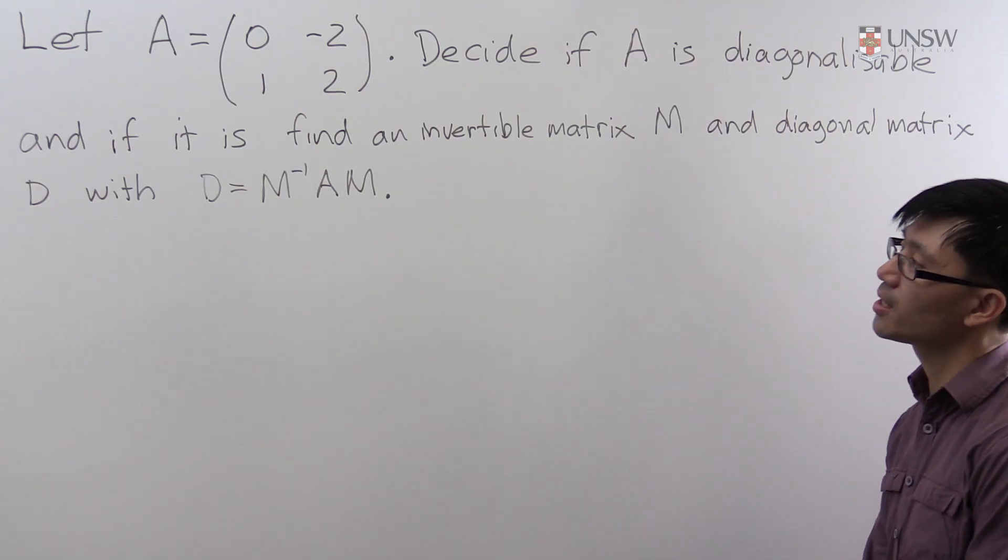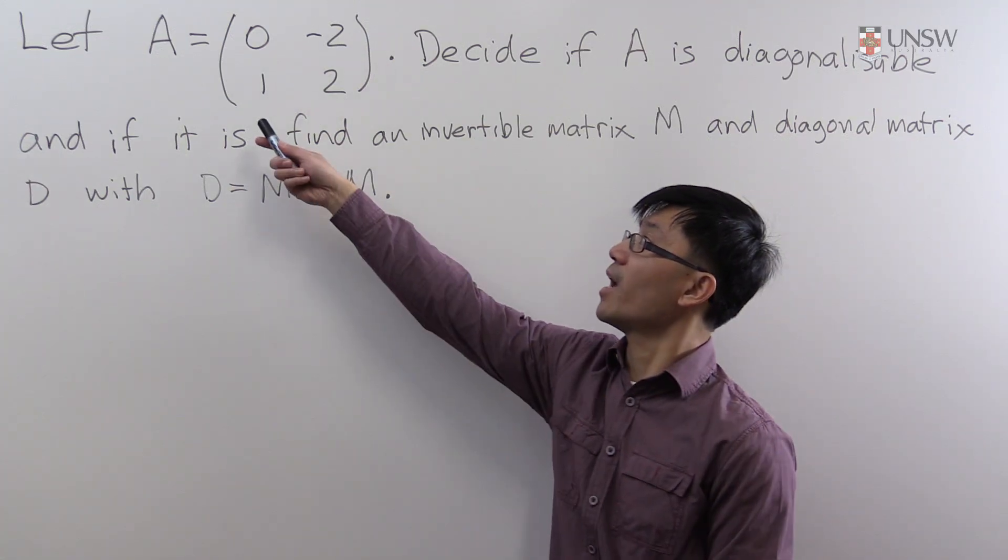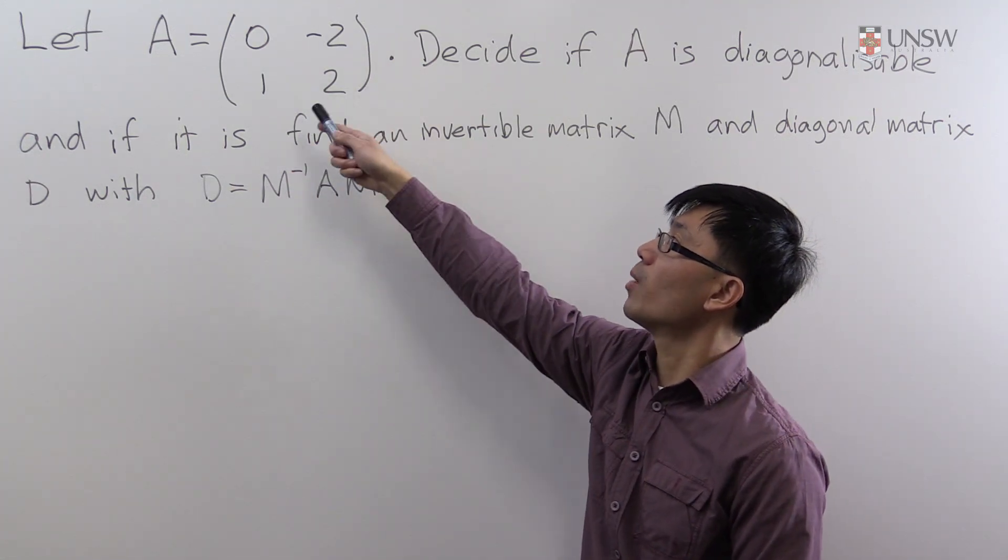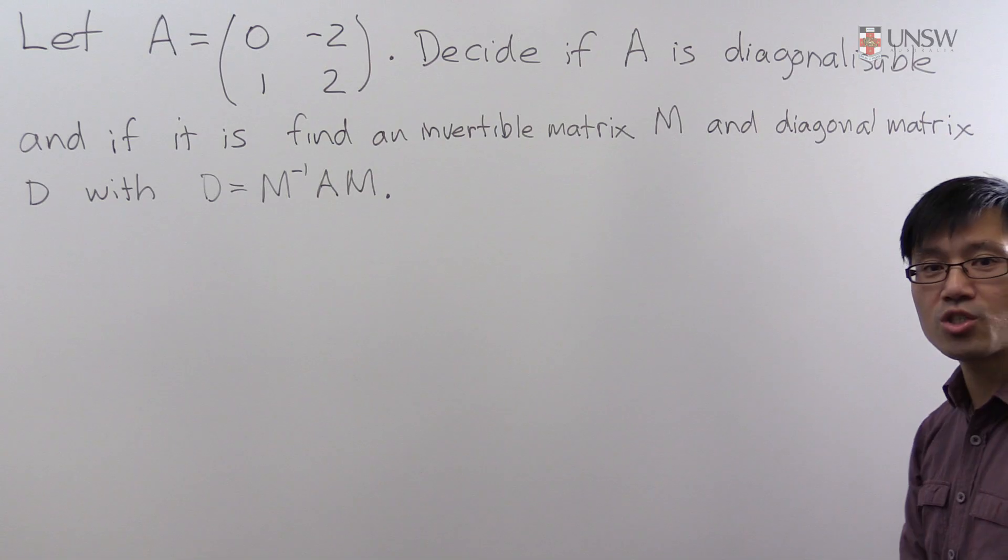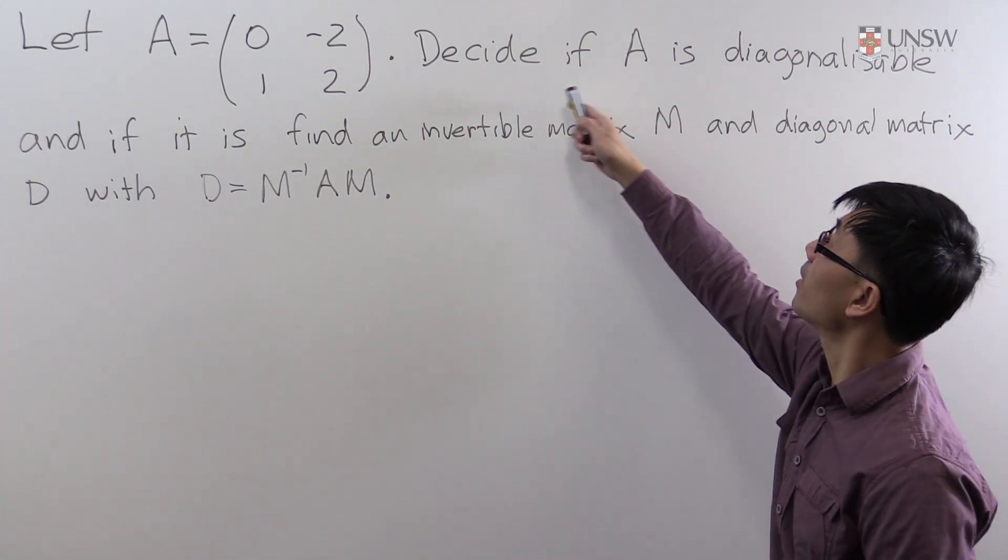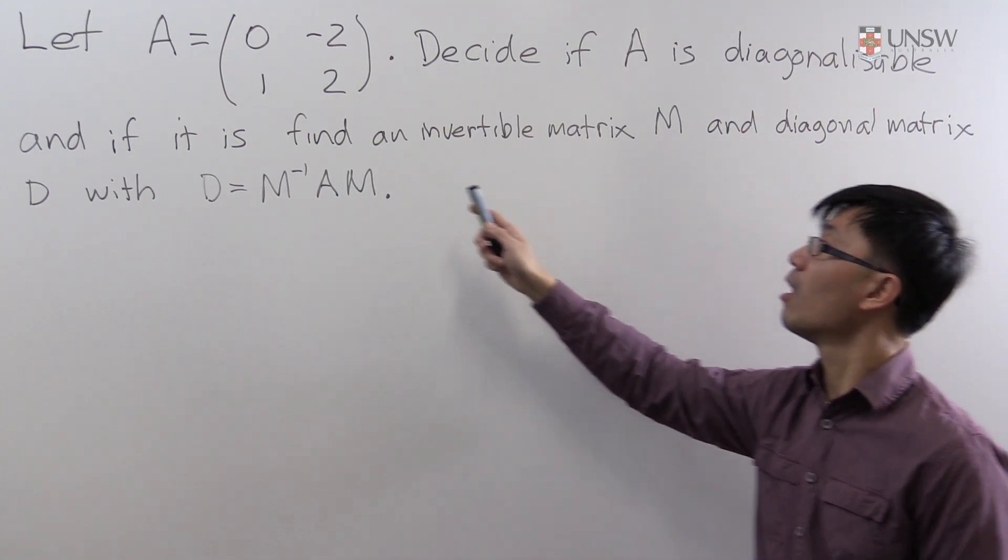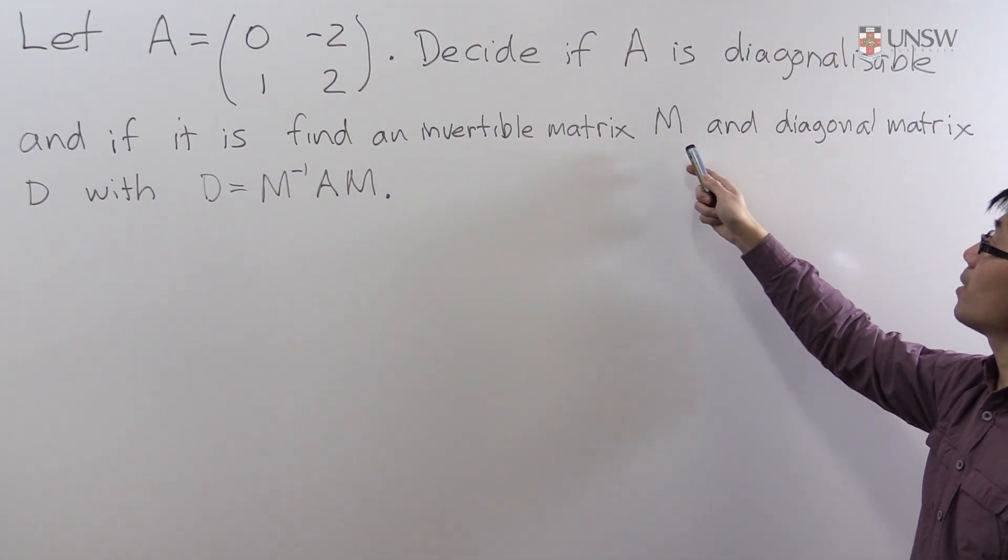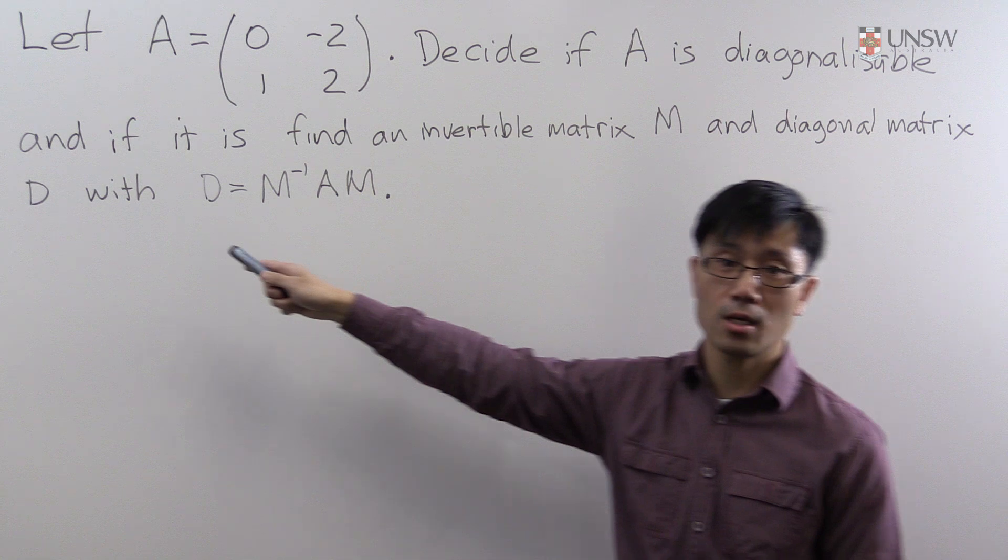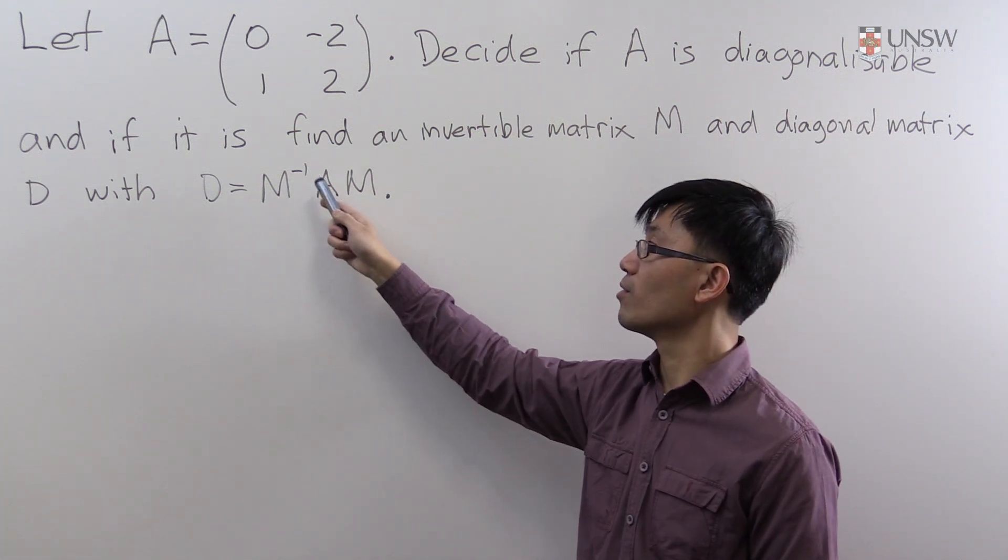This particular question involves the matrix A which is [[0, -2], [1, 2]]. The question asks us to decide if A is diagonalizable and if it is, find an invertible matrix M and a diagonal matrix D with D equal to M inverse AM.